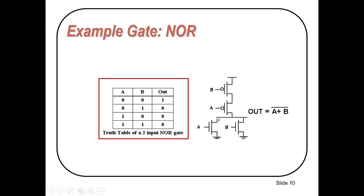Let's discuss the design of a NOR gate. The output function is (A+B)'. First we start with the pull-down network: A and B are in parallel, so we use N-MOS transistors in parallel to implement this function in the pull-down network. Similarly in the pull-up network we use P-MOS transistors — but because the N-MOS transistors are in parallel in the pull-down network, the P-MOS transistors will be in series in the pull-up network. Apply VDD and ground accordingly.